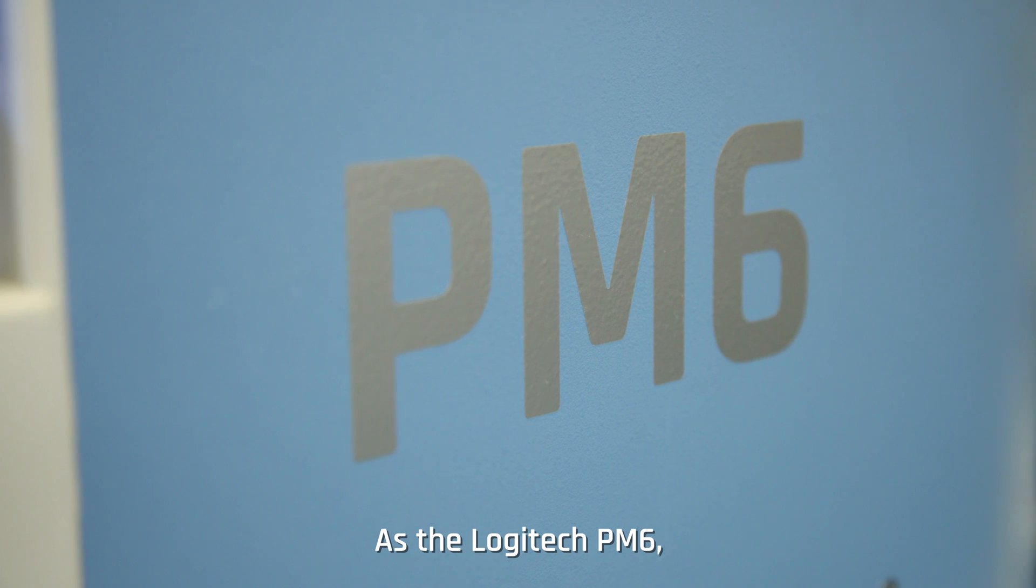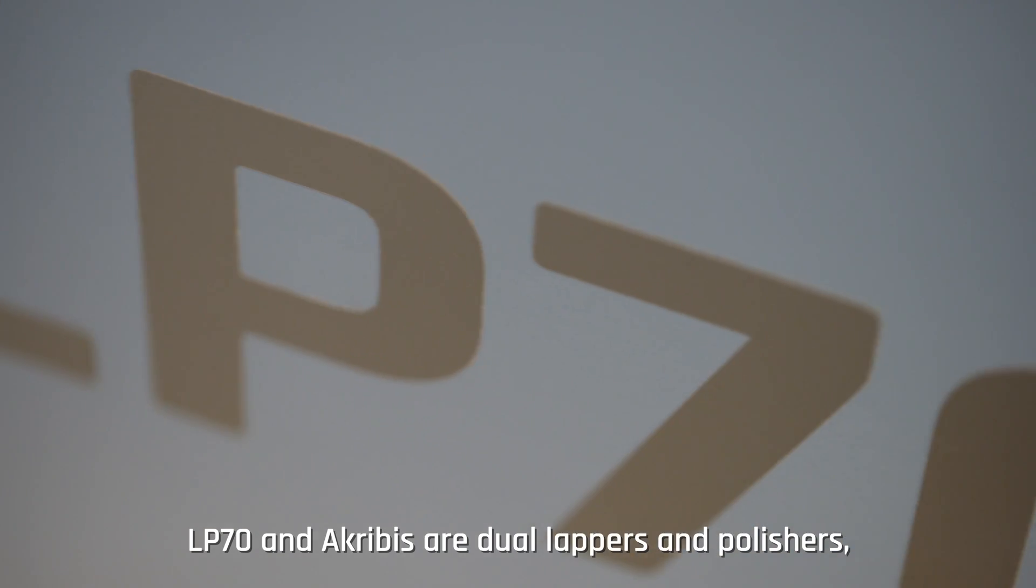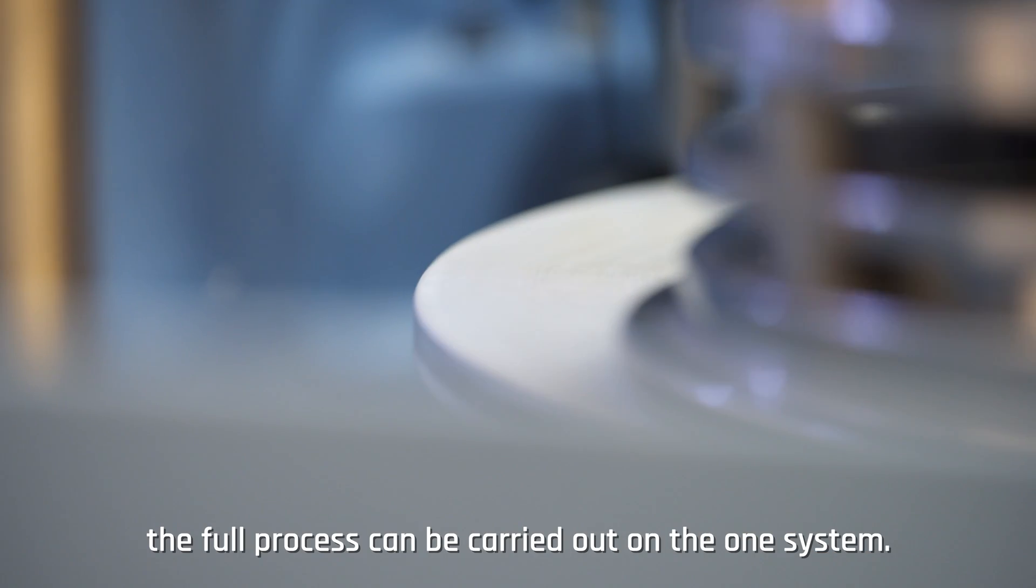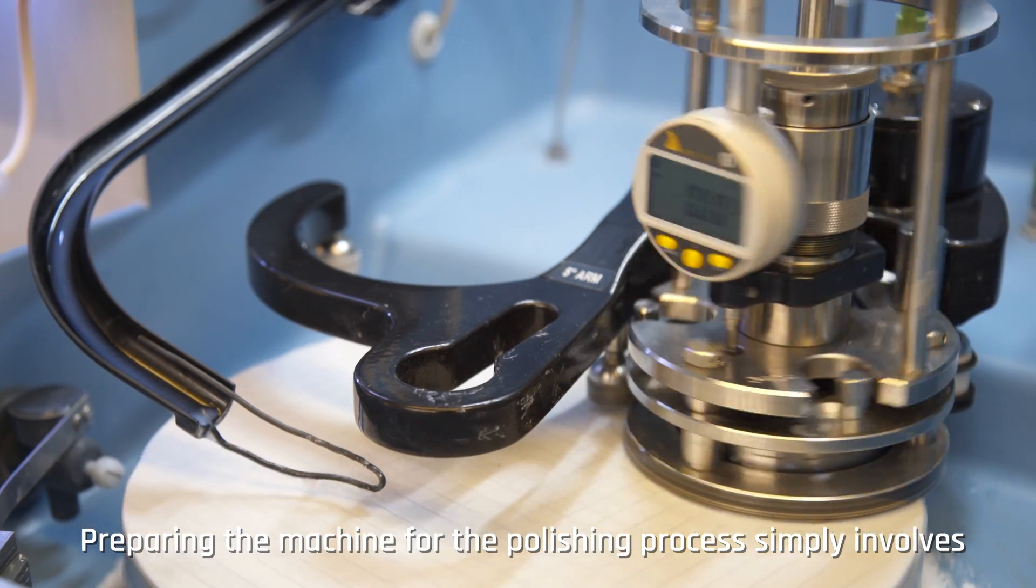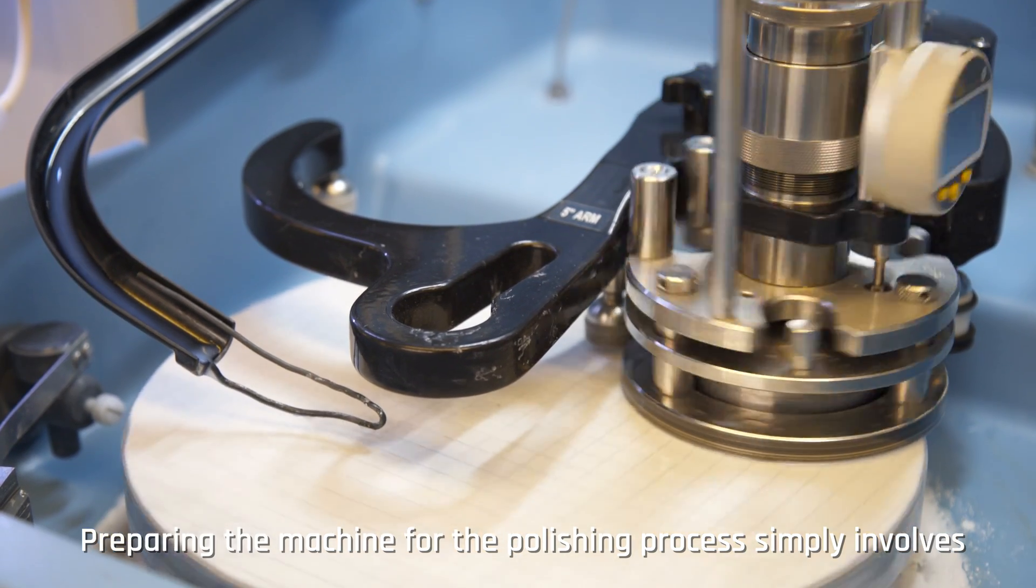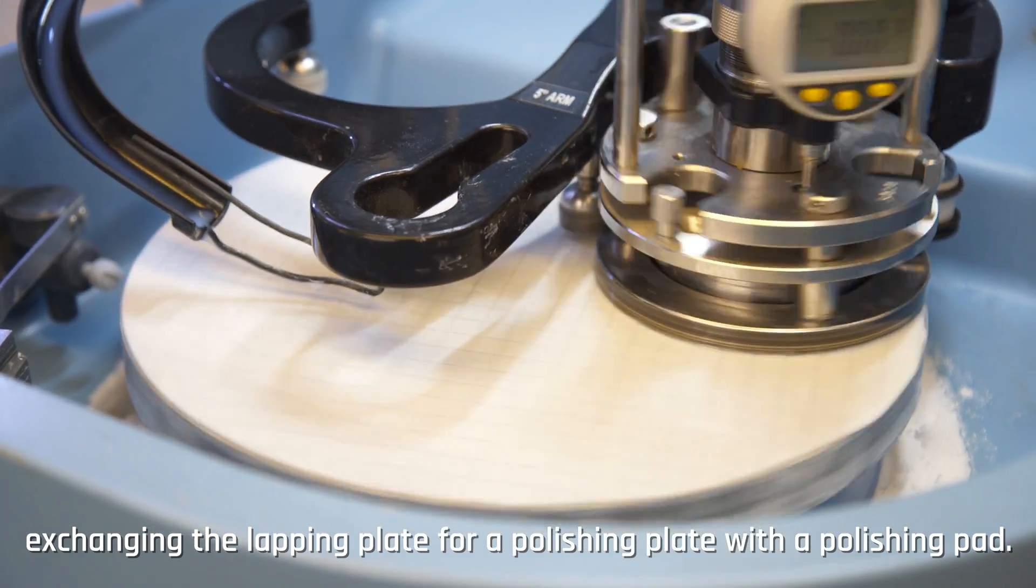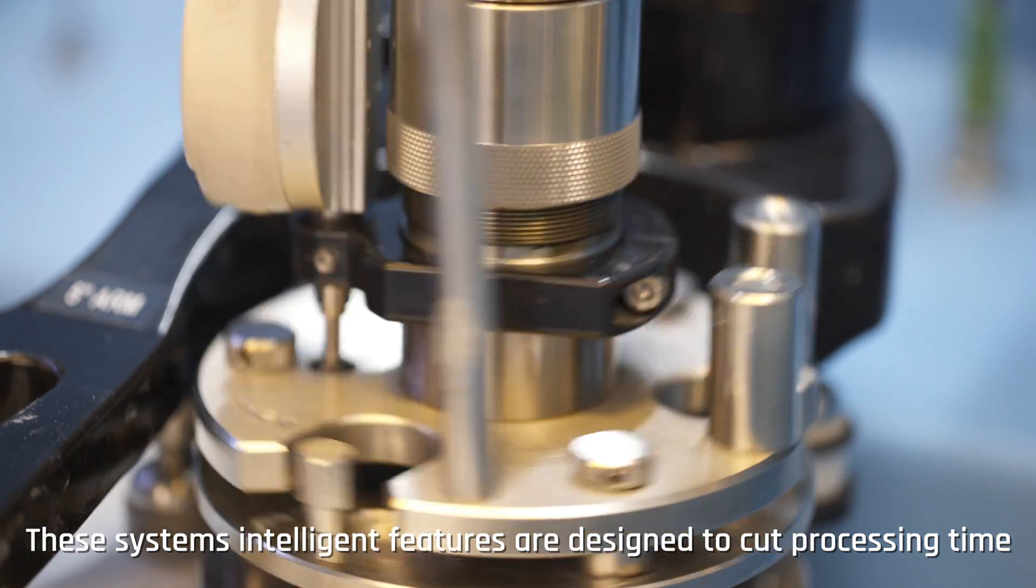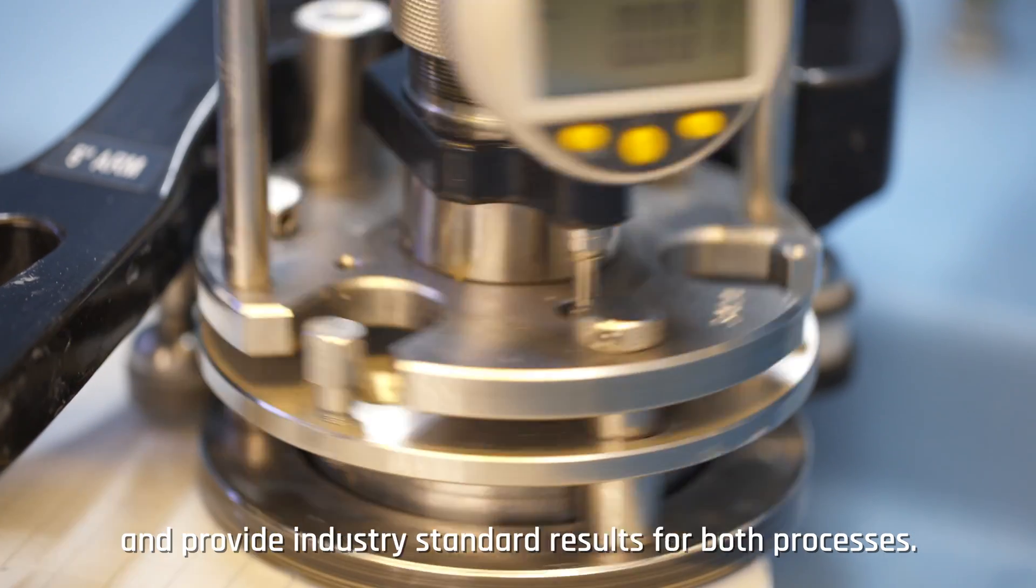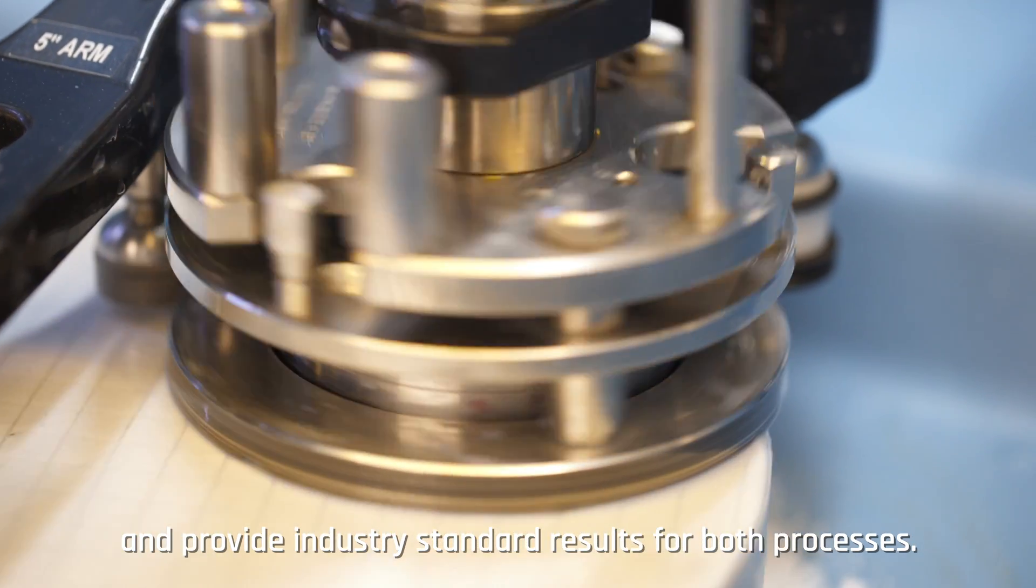As the Logitech PM6, LP70, and Acrobus air are dual lappers and polishers, the full process can be carried out on the one system. Preparing the machine for the polishing process simply involves exchanging the lapping plate for a polishing plate with a polishing pad. These systems' intelligent features are designed to cut processing time and provide industry standard results for both processes.